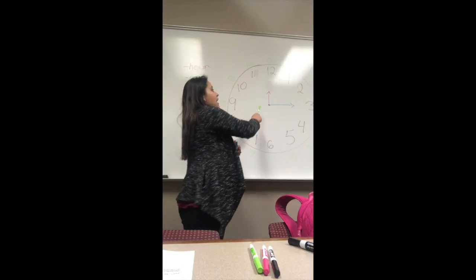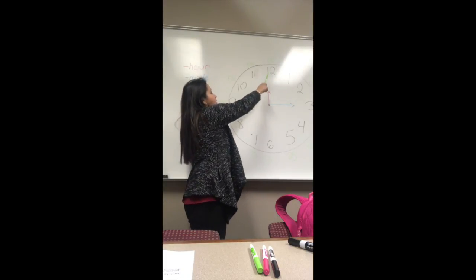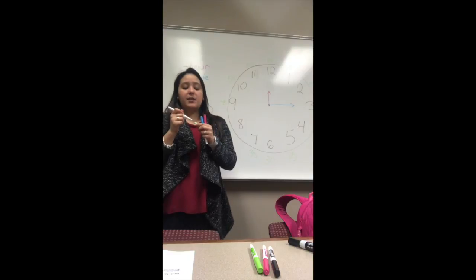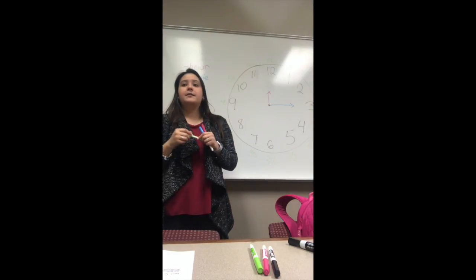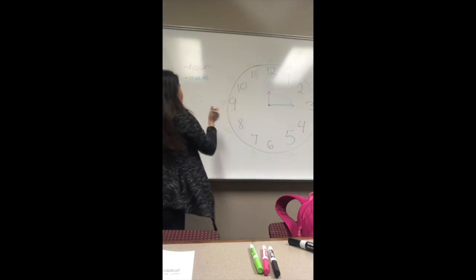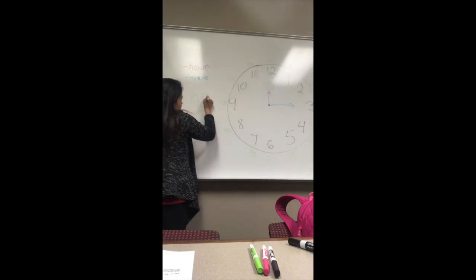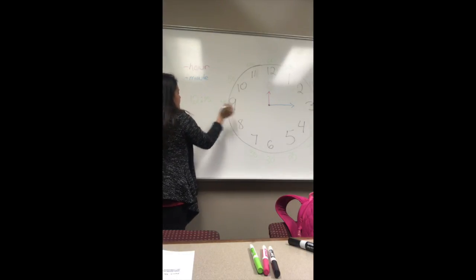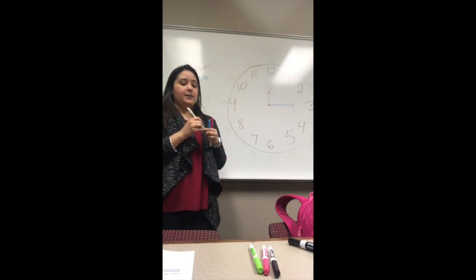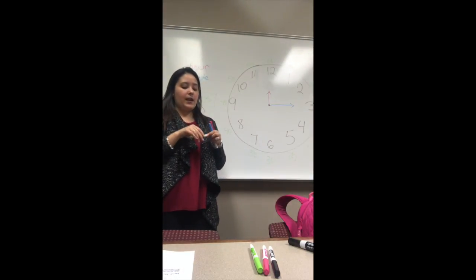So we have all of the minutes. Now what time does our clock show us? We established that the hour was 12 o'clock, and the minutes — it's 15. So the time that this clock shows us is 12:15.